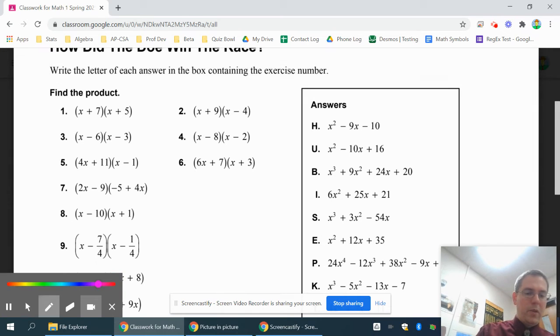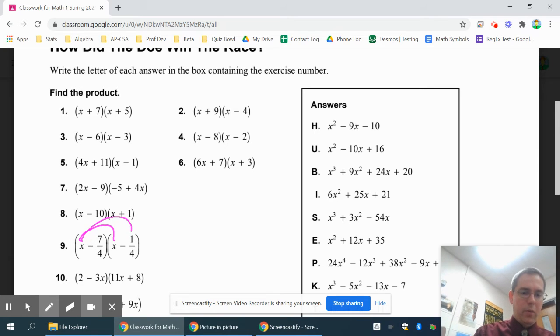And basically when I do the distributing method, I just say I'm going to take the x and multiply it by everything in this parenthesis. Let's try to draw that a little bit more neatly. So x gets multiplied by x, and x gets multiplied by negative 1 fourth. So that means I start off with x squared minus 1 fourth x.